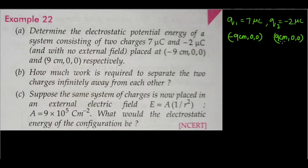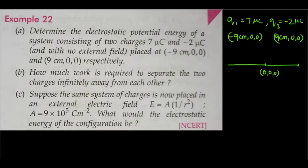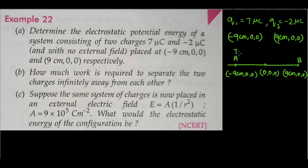The y and z coordinates are 0, meaning the two charge particles are present on the x-axis. Let me draw the x-axis here — this is the origin with coordinates (0, 0, 0). Point A has coordinates (minus 9 cm, 0, 0) and point B has coordinates (plus 9 cm, 0, 0). At point A we have 7 micro coulombs, at point B we have minus 2 micro coulombs. There is no external electric field.